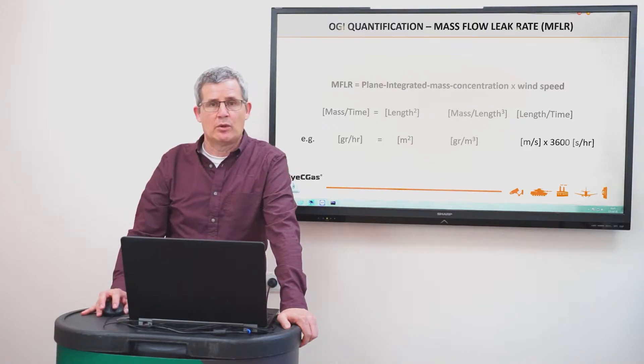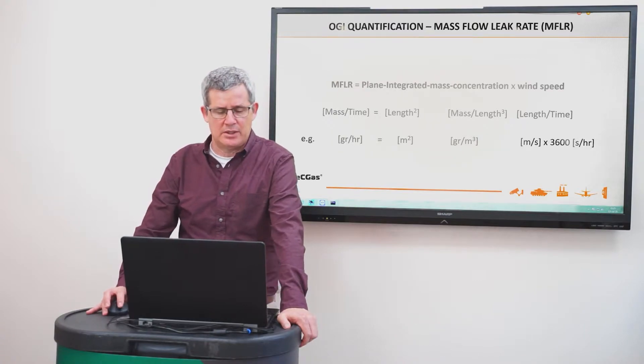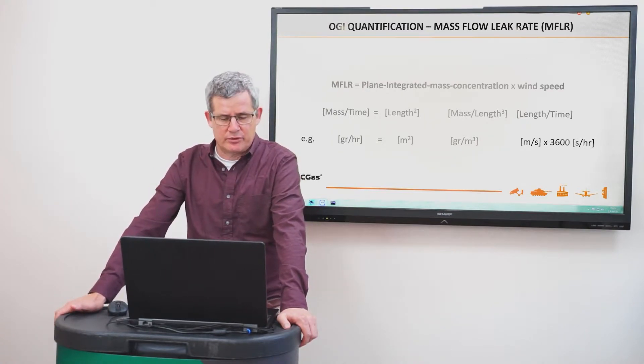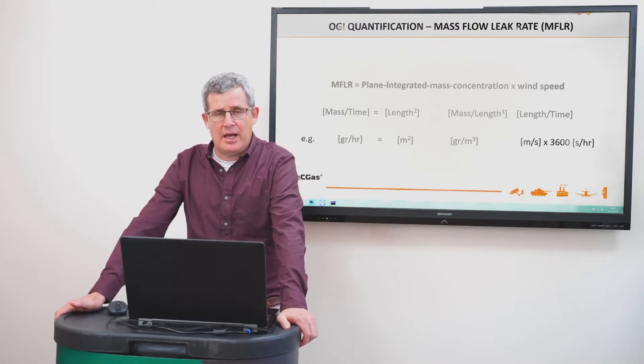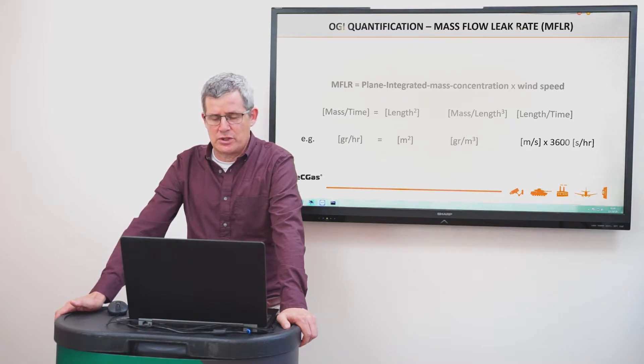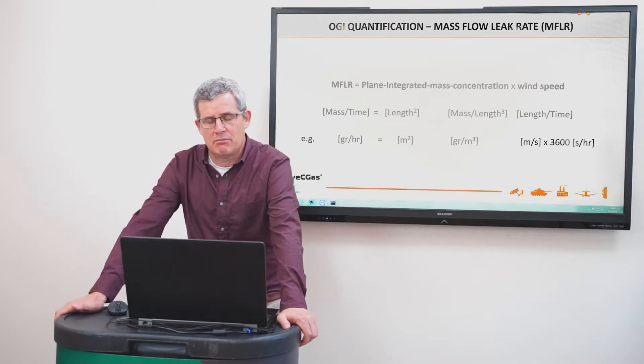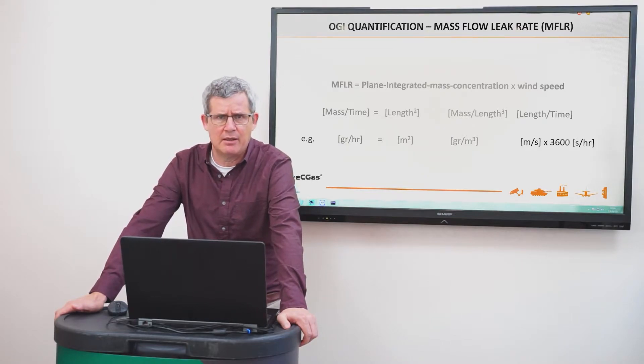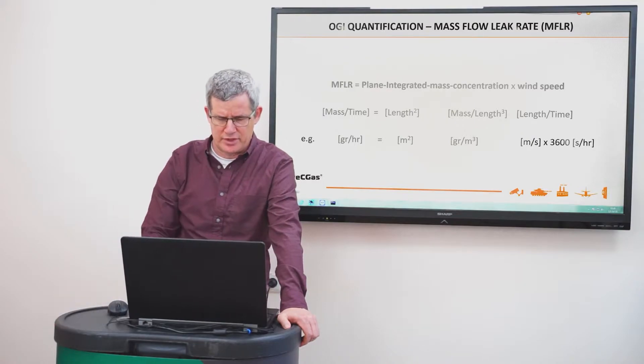And if we look at the unit analysis over here, the mass flow leak rate is mass per time, for example, gram per hour. The plane area is meter square. The mass concentration is gram per cubic meter and the wind speed is meter per second. And after we convert it to per hour, we need to multiply it by 3600.